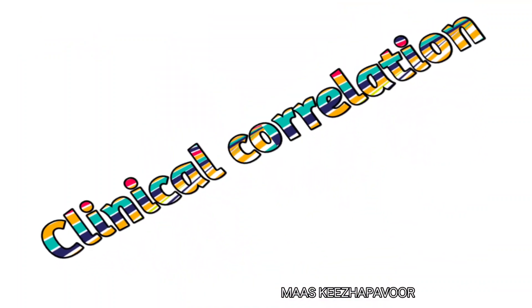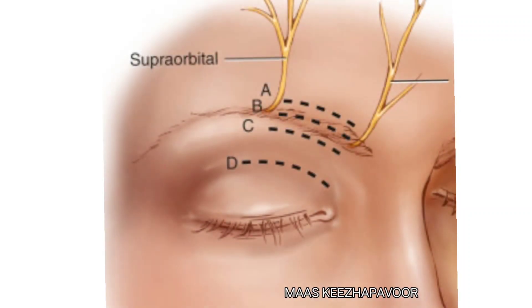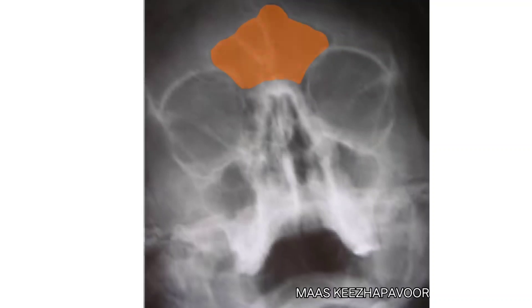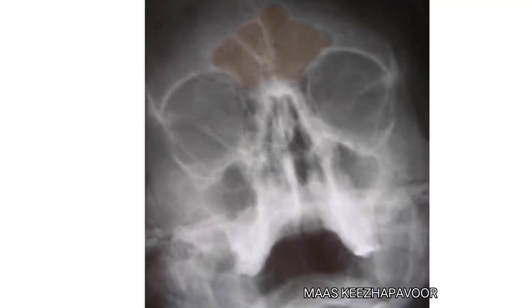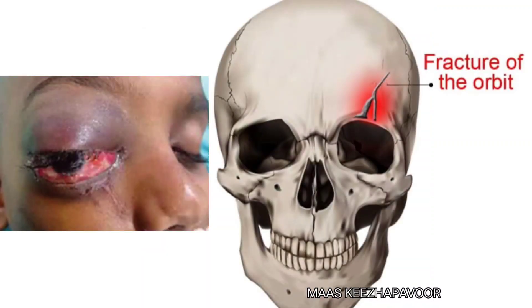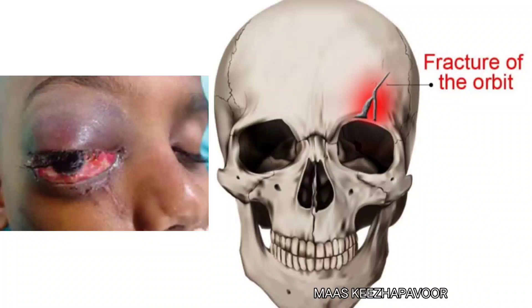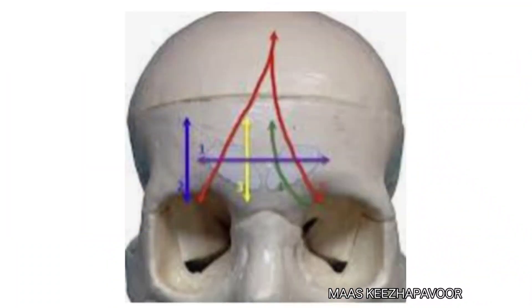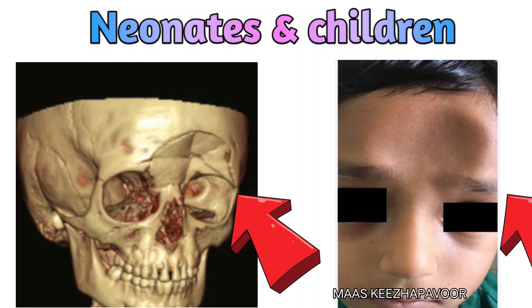The metopic suture may persist partially or completely in 8% of individuals. Clinically, frontal sinusitis is diagnosed by eliciting tenderness by pressure over the medial one-third of the supraorbital margin. Radiological diagnosis is made by the presence of opacity within the frontal air sinus on an X-ray film. The fracture of the orbital plate of the frontal bone leads to hemorrhage in the orbit, acquiring a triangular shape underneath the conjunctiva with the apex towards the cornea and base towards the orbital margin.